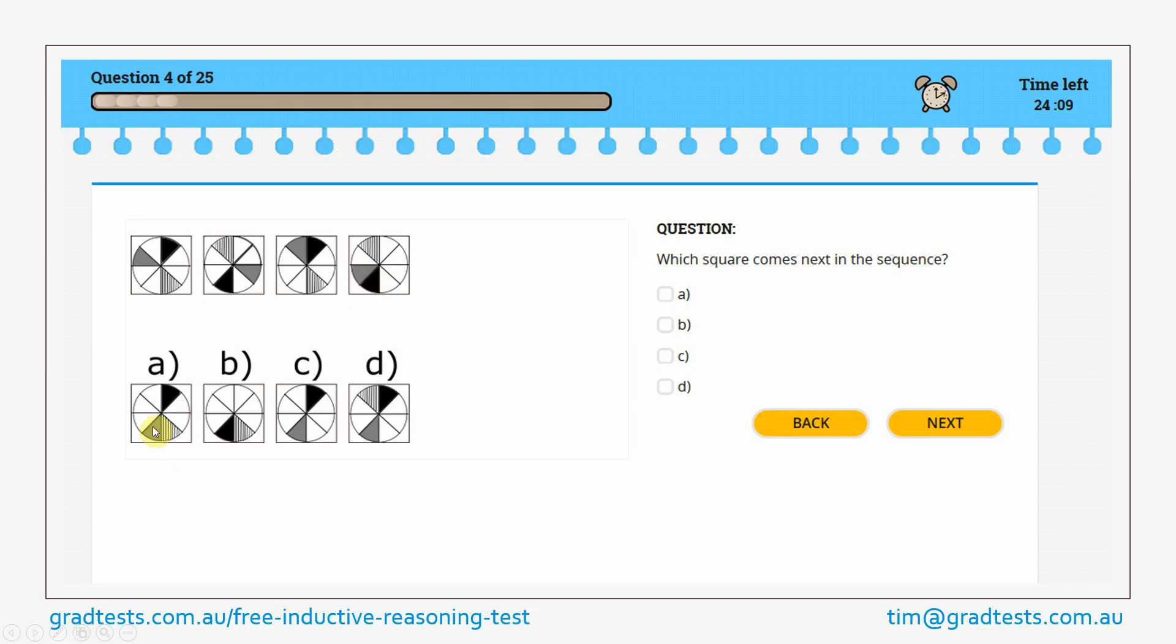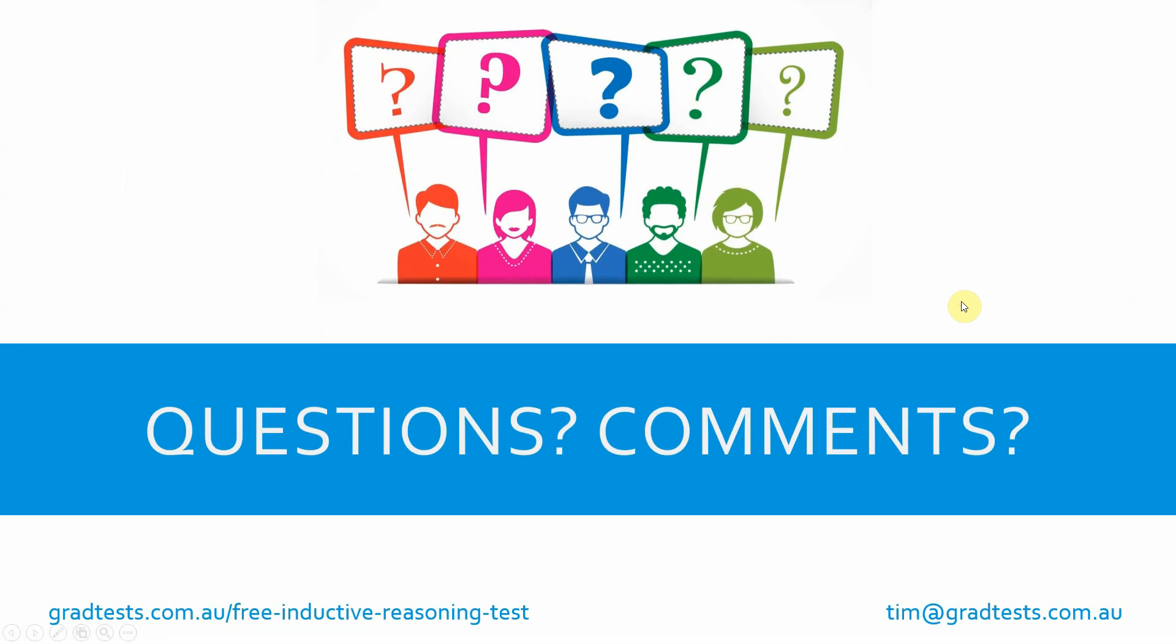just confirm that A does indeed have the gray segment in that position, and it does. Definitely, it's looking like A is the correct answer. I'd select that at this point and I'd move on. Okay, if you have any